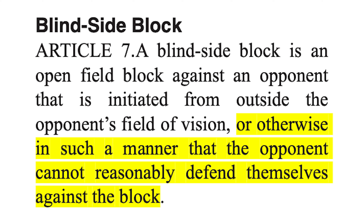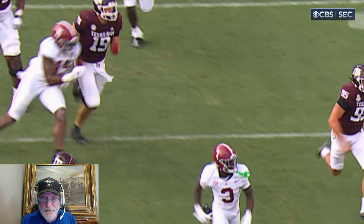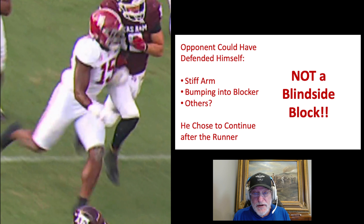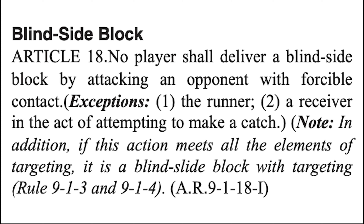In this case it's not a blindside block — you can see that very clearly. The blocker was inside the field of vision. What about the other part: 'in such a manner the opponent cannot reasonably defend themselves'? The opponent continued even though he knew the blocker was beside him, in his field of view. He could have stiff-armed, bumped, or done other things. Bottom line: this wasn't a blindside block.